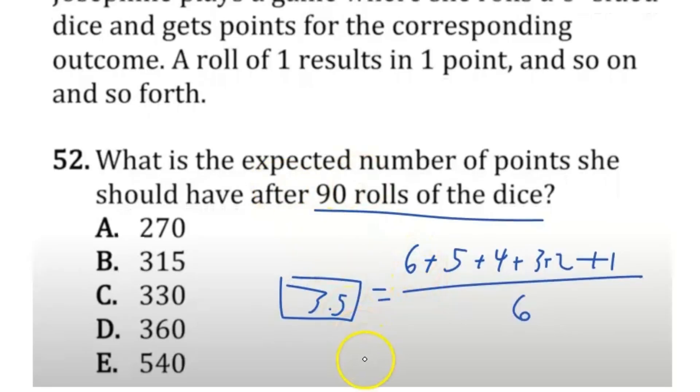Therefore, if you roll the dice 90 times, we just have to multiply this number by a value of 90. And 90 times 3.5 is a value of 315, and therefore B is our answer.